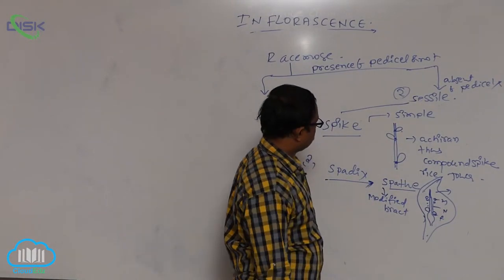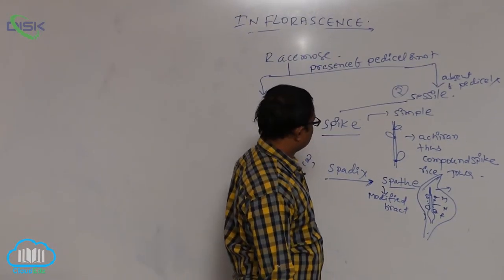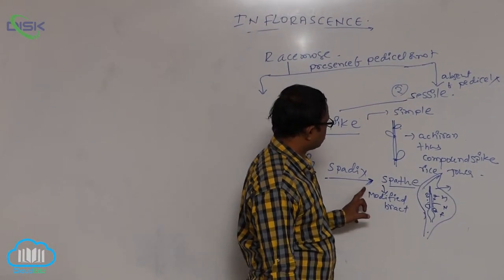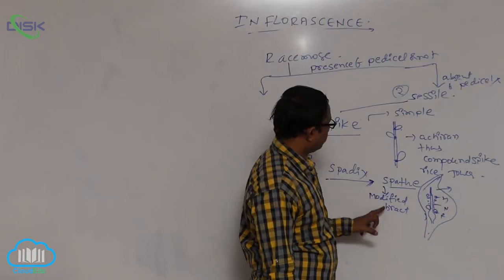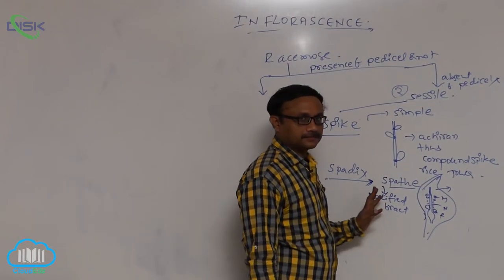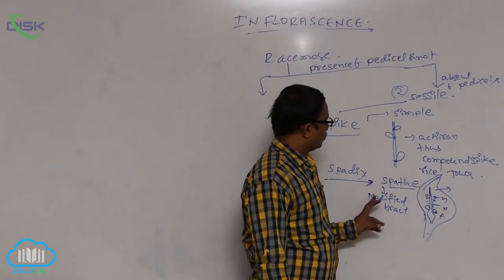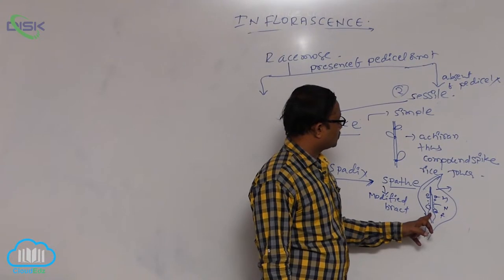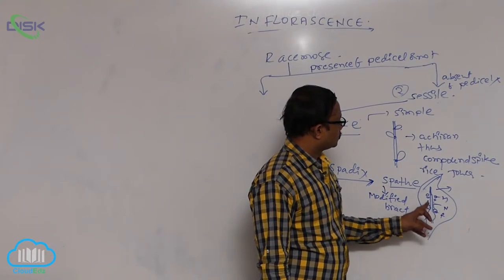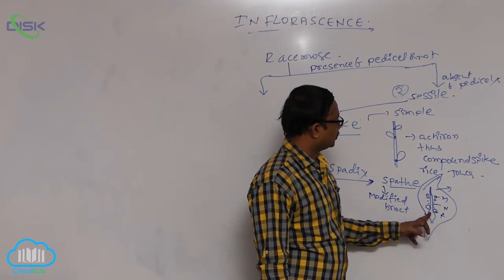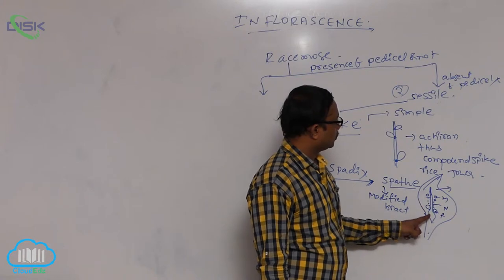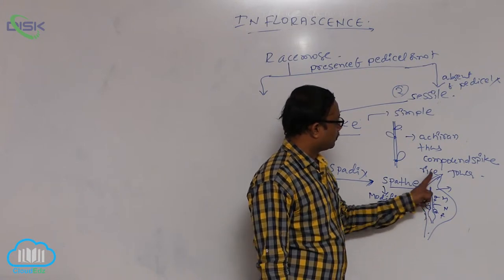Spadix means the inflorescence is covered by a modified bract known as the spathe. On the floral axis, sessile flowers are arranged in an acropetal arrangement. These flowers are unisexual and covered by the spathe — that structure is known as the spadix.